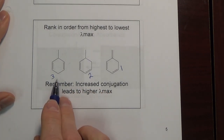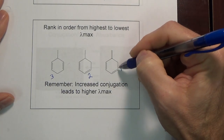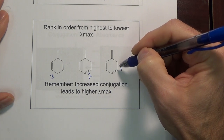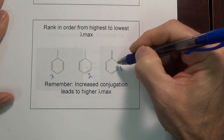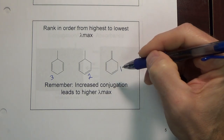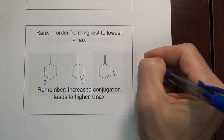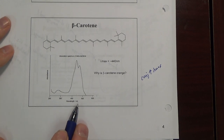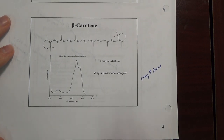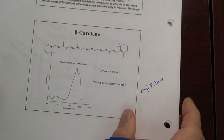Which one of these is more likely to absorb in the visible? That would be the one with the highest lambda max. Does it absorb in the visible? Probably not — three double bonds is probably not enough conjugation to give a red shift that much into the visible. Eleven double bonds gets you into the visible at about 440. It probably takes about six or seven double bonds to get you into the visible.